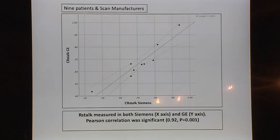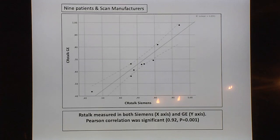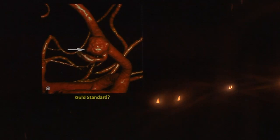A key question for using this tool across different institutions is whether you get the same enhancement ratio on different machines — Siemens, GE, Philips. We scanned 10 patients on a Siemens and a GE scanner 48 hours apart. You won't get the same raw enhancement measurement, but the ratio when you normalize with the pituitary stalk is the same across scanners.